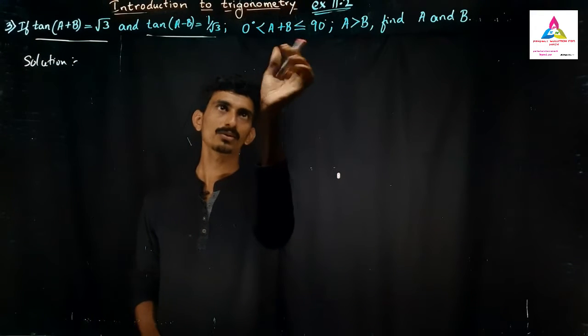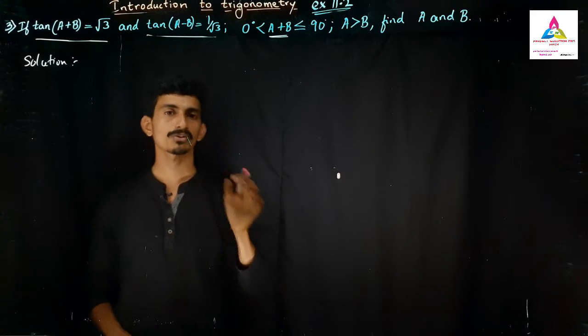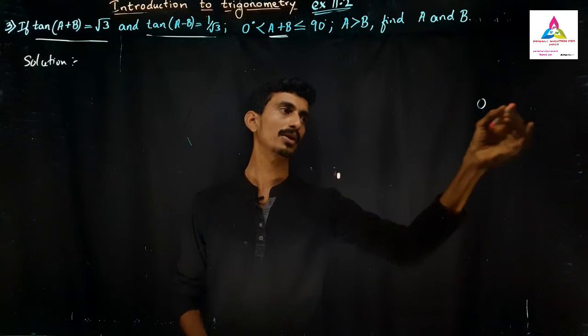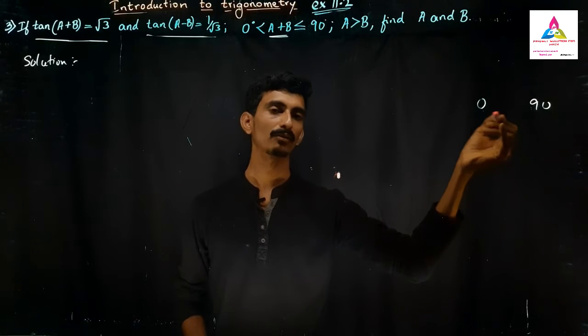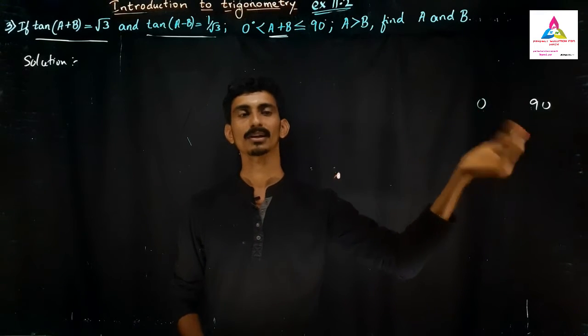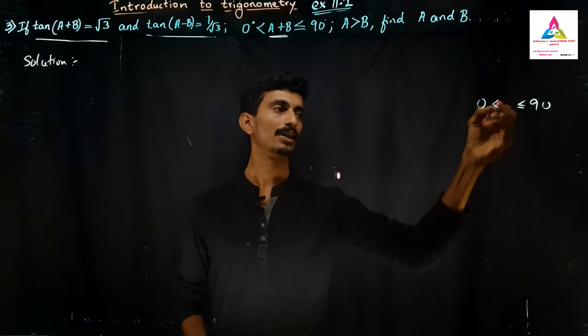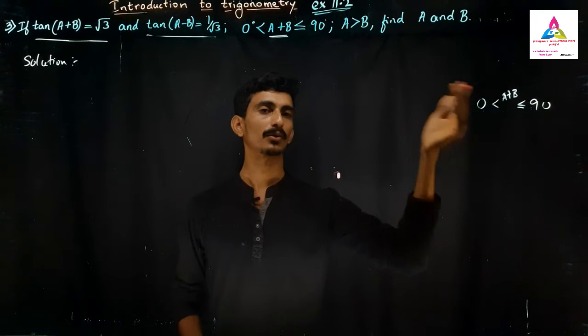Before that I will tell you why they have given this. When we are finding the trigonometry function, what we are going to find now? Always the angle will be between 0 and 90 degrees, or it may be equal to 0 and equal to 90. But the angle will not be more than 90 or less than 0. This is to be remembered. And obviously here the higher not only one angle, the higher than A+B. So that you have to remember.